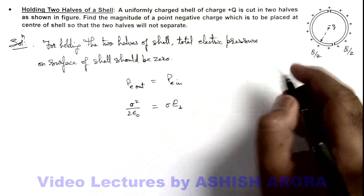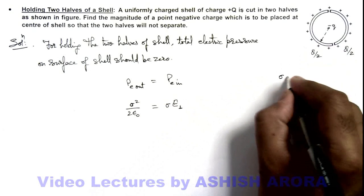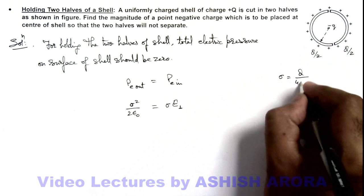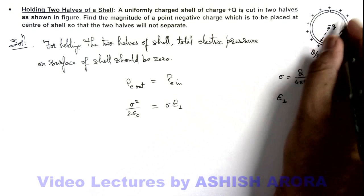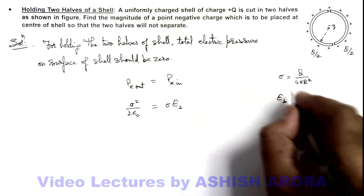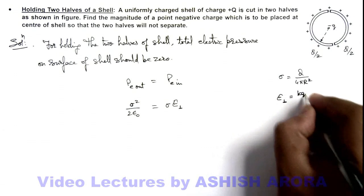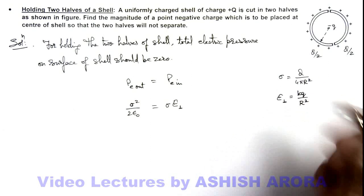And here the charge density sigma for the shell we can write as Q by 4 pi r squared. And the perpendicular electric field due to this minus q charge on the surface of this shell can be written as k q by r squared, these we already studied.